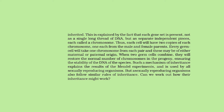Every germ cell will take one chromosome from each pair, and these may be of either maternal or paternal origin. When two germ cells combine, they restore the normal number of chromosomes in the progeny, ensuring the stability of the DNA of the species. Such a mechanism of inheritance explains the results of Mendel's experiments and is used by all sexually reproducing organisms. Asexually reproducing organisms also follow similar rules of inheritance.